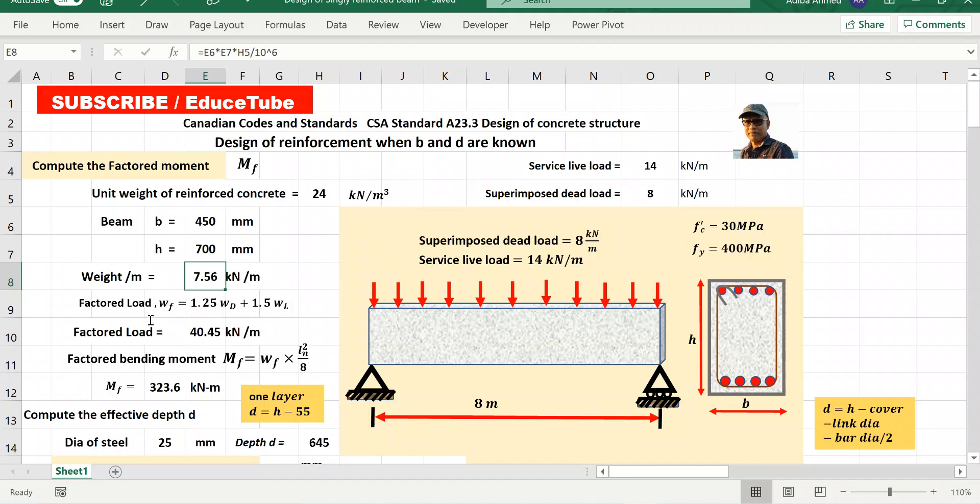Then I need to find factored loads. So how to get that factored loads? I have to use this equation. This factored dead load factor 1.25, live load factor 1.5. So using all this I found factored load.